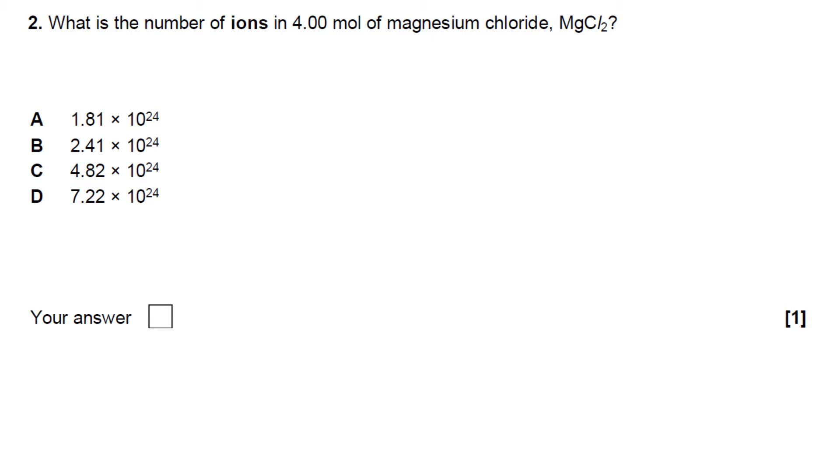Although on the face of it it sounds like a fairly simple job to do, it's actually a little bit tricky because you've got two things to consider. You've got the number of moles of magnesium chloride and the fact that magnesium chloride is made up of more than one ion in the first place.